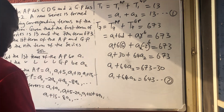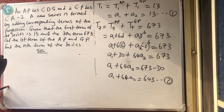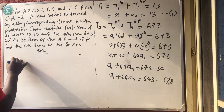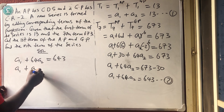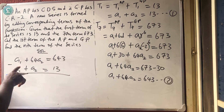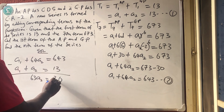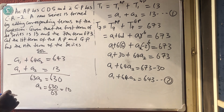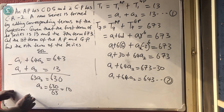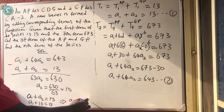Solving equations 1 and 2 simultaneously: equation 2 says A1 plus 64A2 equals 643, and equation 1 says A1 plus A2 equals 13. Subtracting equation 1 from equation 2 gives 63A2 equals 630, so A2 equals 630 divided by 63, which equals 10. Since A1 plus A2 equals 13, substituting A2 equals 10 gives A1 plus 10 equals 13, so A1 equals 3.